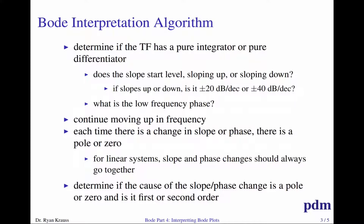Then you just move up in frequency. Every time there's a change in slope or phase, that means there's a pole or a zero. If you're talking about a linear system, your changes in slope and phase should go together. Two common nonlinearities to be aware of are friction, which tends to show up at low frequencies and makes noisy messy things happen, and time delay in digital systems, which can cause phase roll-off near the Nyquist frequency without affecting the magnitude.